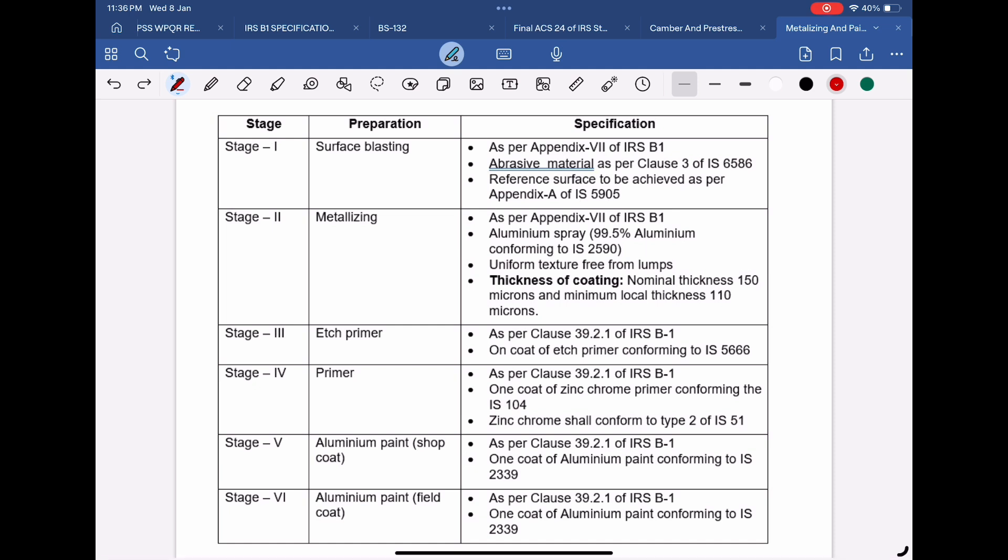Various stages involved have been tabulated here. Surface blasting and metallizing of steel girders is done as per procedures mentioned in Appendix 7 of IRS B1. Subsequent operations of applying primer and paints are to be done in accordance with Clause 39.2.1 of IRS B1.